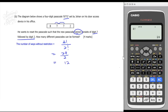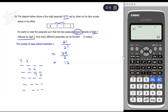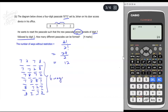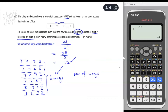Now find how many arrangements have digit 7 followed by digit 2. The pair '72' can appear in positions 1-2, 2-3, or 3-4 — that's 3 possible positions. The remaining 2 digits are 7 and 8, which can be arranged as 7,8 or 8,7 — giving 2 arrangements. So there are 3 times 2 = 6 ways where 7 is followed by 2. The number of valid passcodes = 12 minus 6 = 6 ways.